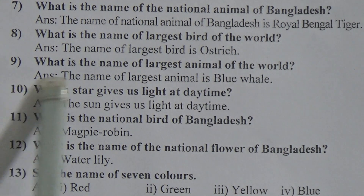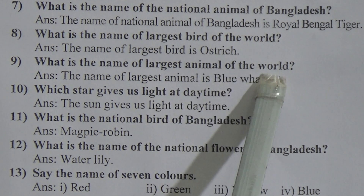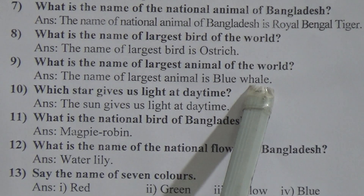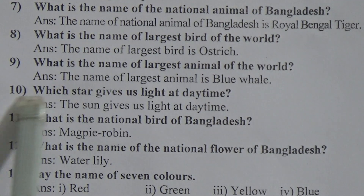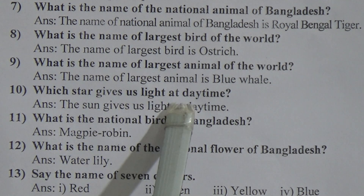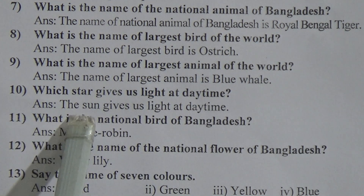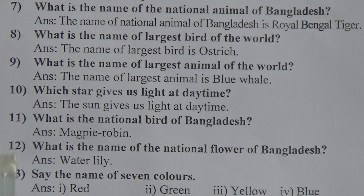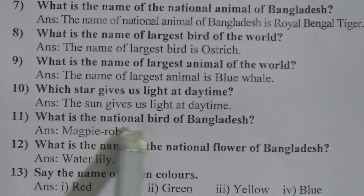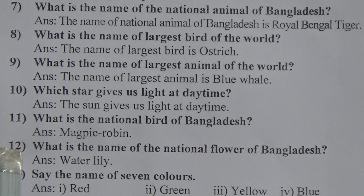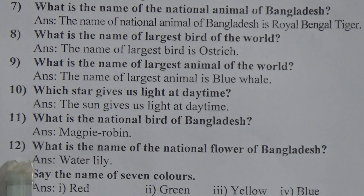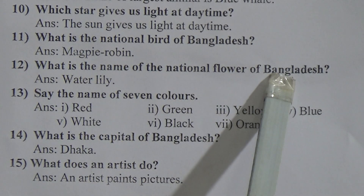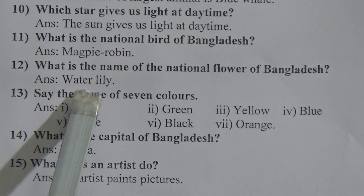Nine number: what is the name of the largest animal of the world? The name of the largest animal is blue whale. And ten number: which star gives us light at daytime? The sun gives us light at daytime. Eleven number: what is the national bird of Bangladesh? Answer — magpie robin. And twelve number: what is the name of the national flower of Bangladesh? Answer — water lily.